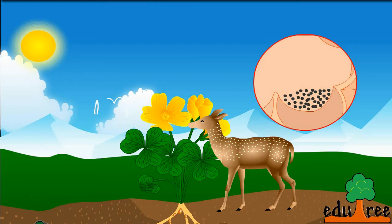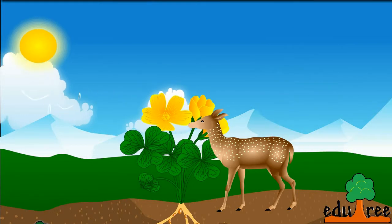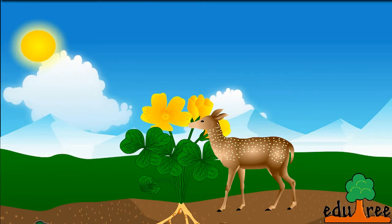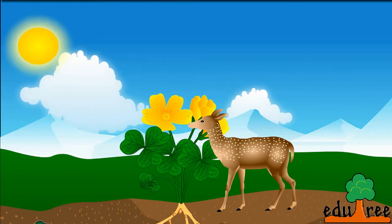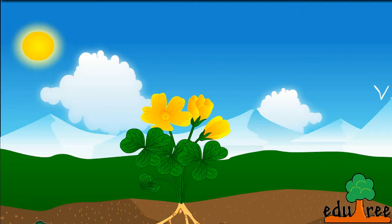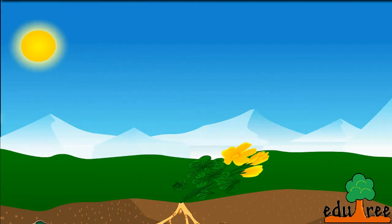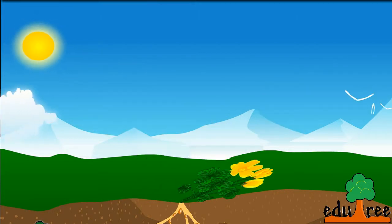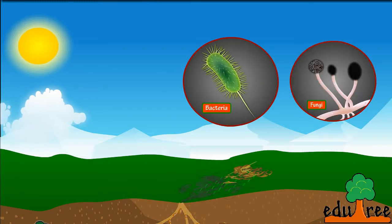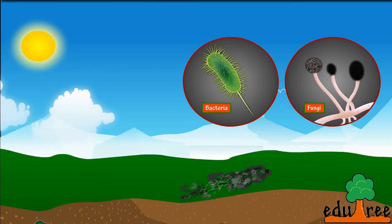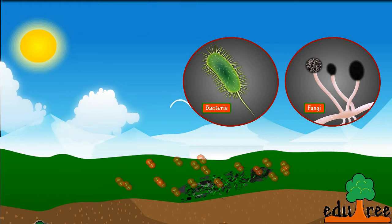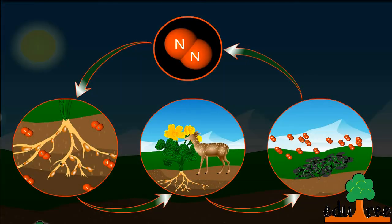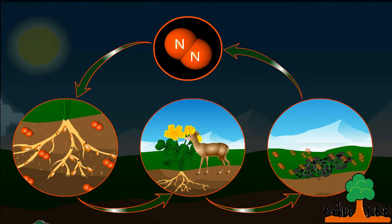When animals eat these plants, plant proteins and other nitrogenous compounds consumed by animals are converted into animal proteins. Animal proteins are excreted out in the form of urea, uric acid, or ammonia. When plants and animals die, the proteins are broken down to release ammonia by the action of bacteria and fungi. This process of ammonia formation is called ammonification.